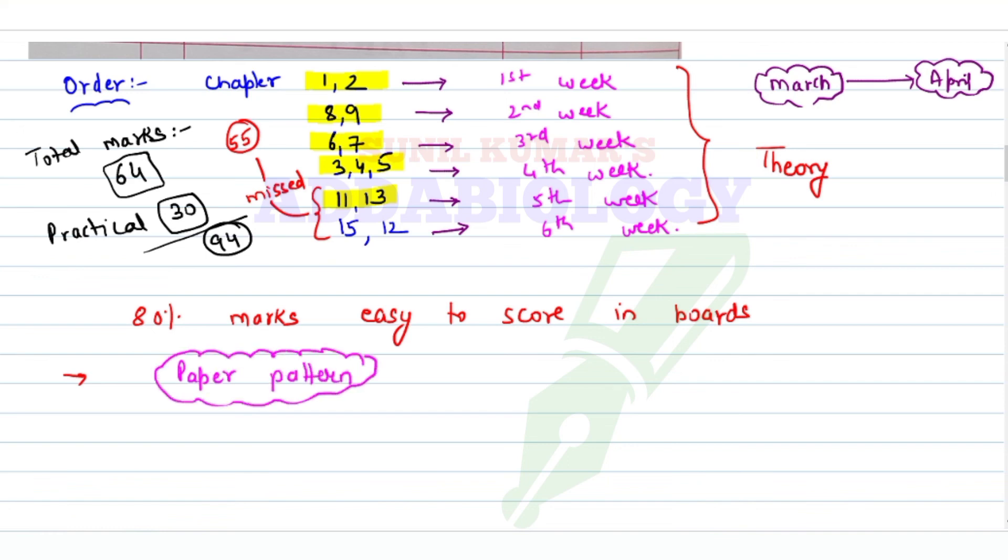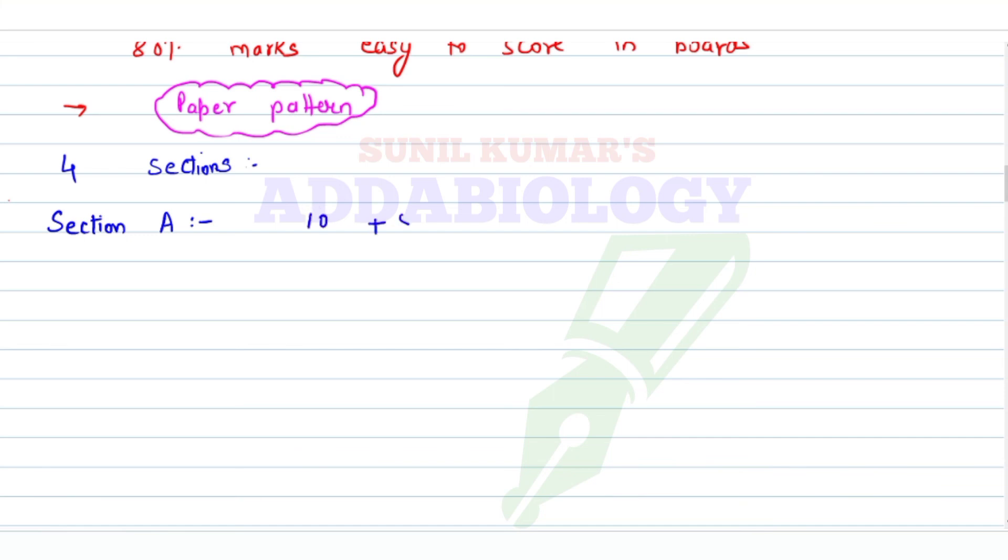Let's talk about board paper pattern. Section A is 10 plus 8, which is 18 marks, where 10 marks will be MCQ and 8 marks will be one line. You cannot afford to lose a single mark here - you have to score full marks, 18 on 18 in Section A.